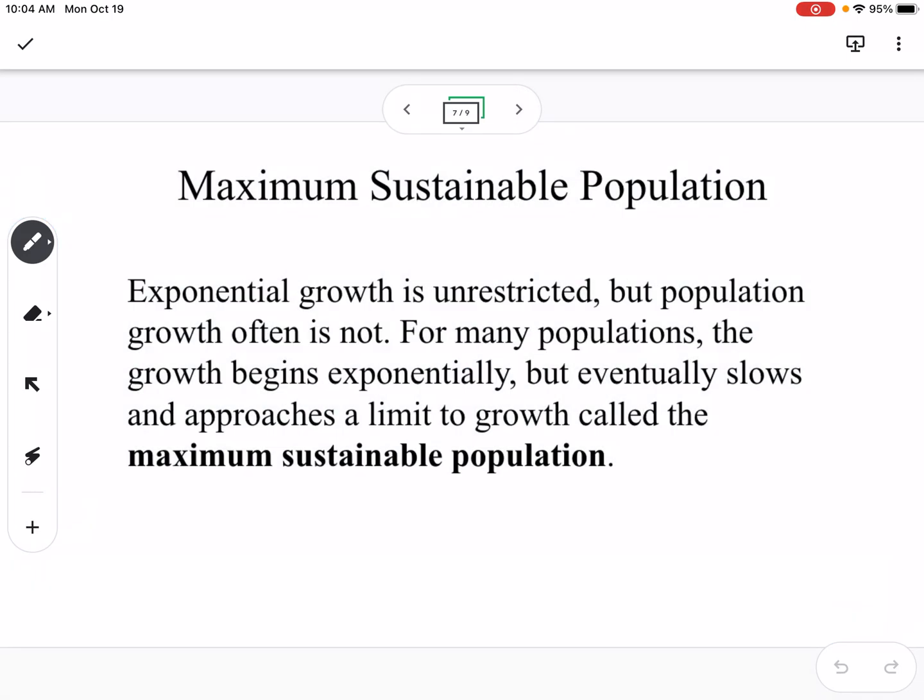The last thing is maximum sustainable population. Exponential growth is unrestricted, but population growth is often not. When we did the modeling project and we were talking about adding new Starbucks stores, we talked about how exponential might not be the best model because we know eventually we can't keep adding stores forever at an exponential growth. Logistic models are better at showing that something's going to increase exponentially at first, but then it's going to level off. It's going to have a maximum sustainable population.